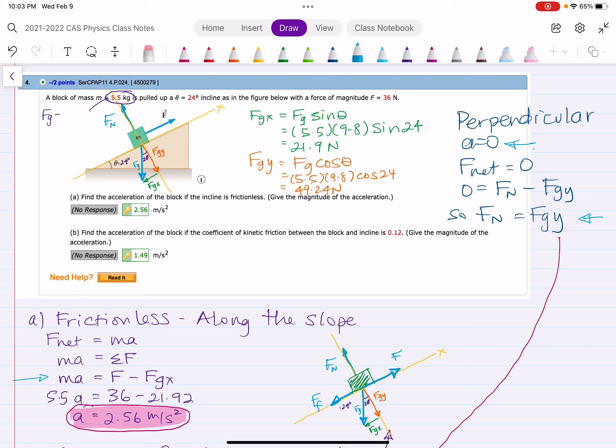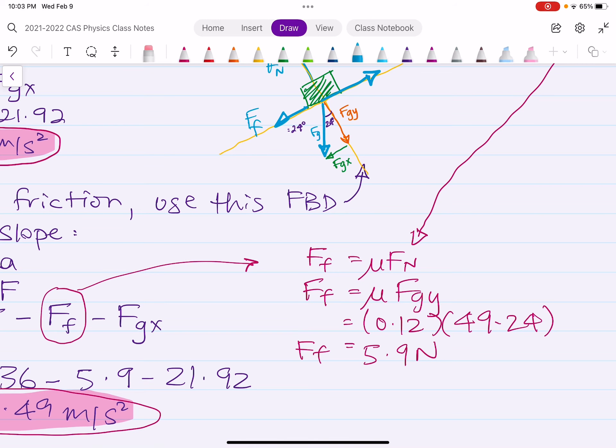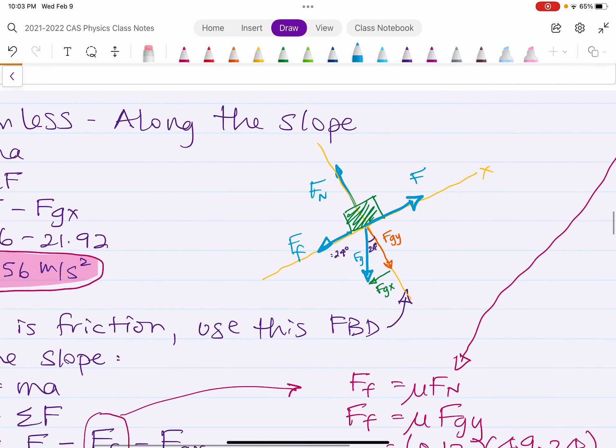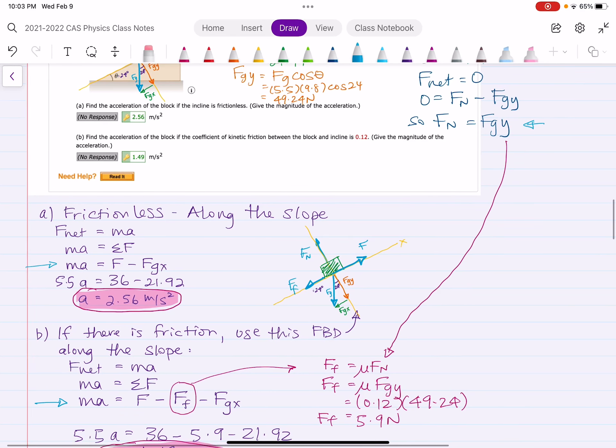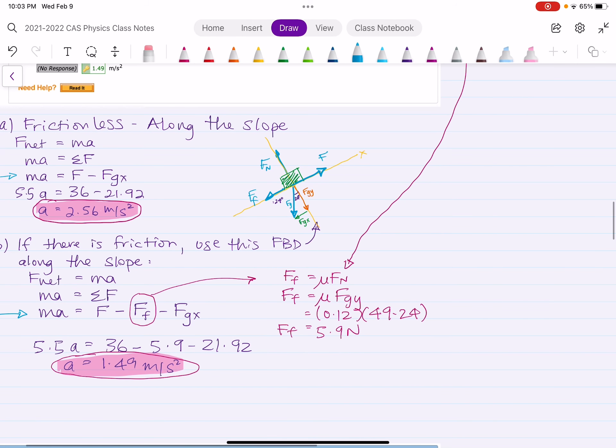So we know that FGY is the same as FN. So down here again, we plug in the value, mu FN. Well, I know that FGY is equal to FN. So I plug in FGY. And then, since I already solved that orange up here, I just plug it in for FF.